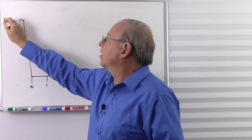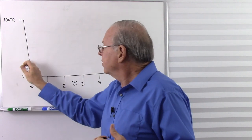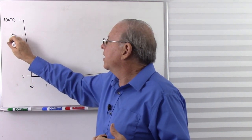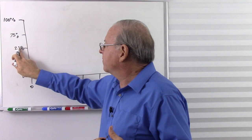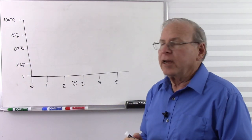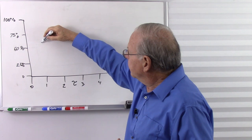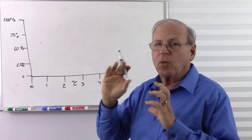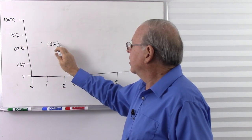Up here is 100% of our source voltage — in this case 1 volt — and here's 0, with about 50% in the middle. We found that if we close the switch for exactly one time constant, assuming 1 ohm and 1 farad, after one second we reach 63.2%. After another time constant, we reach 63.2% of what's left over, putting us higher on the curve after two time constants.